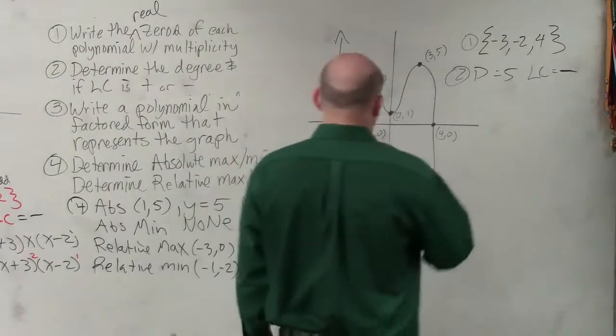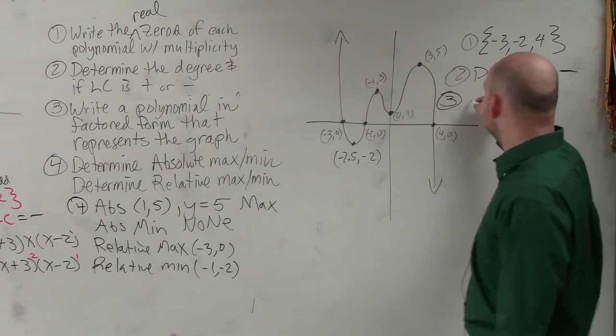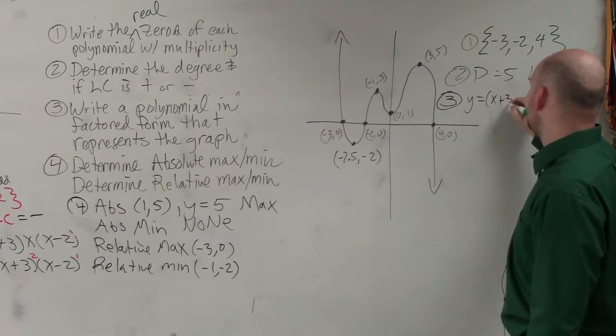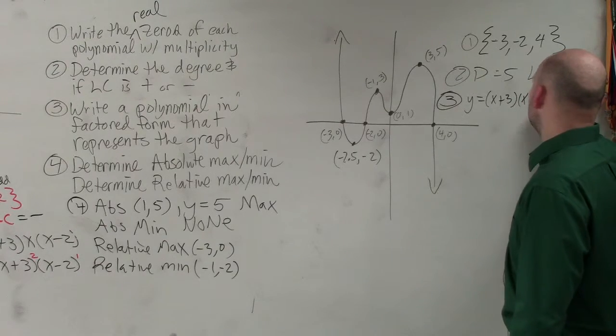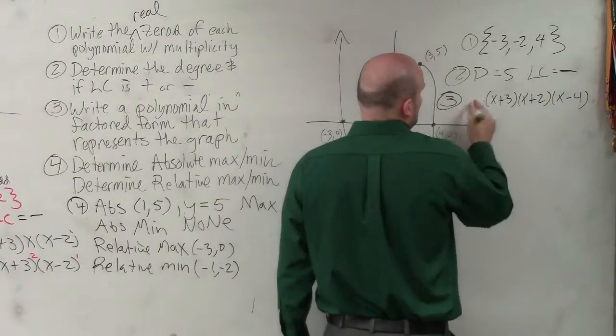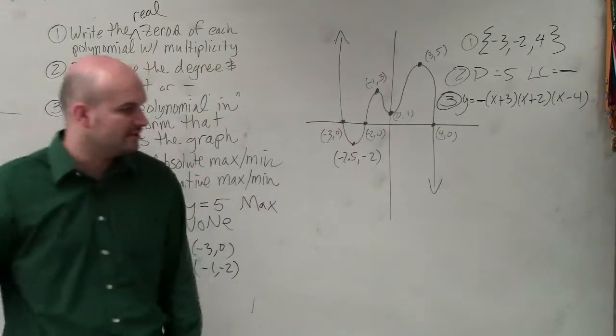Next thing is writing the polynomial in factored form. So in factored form, we'd have y equals x plus 3, x plus 2, and x minus 4. And then make sure we remember that that has a negative leading coefficient, so we'd put a negative in front. Can you see that?